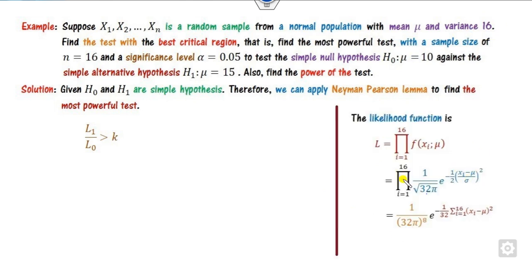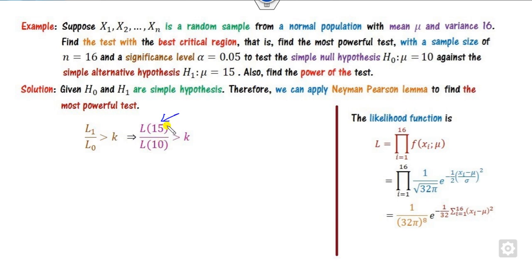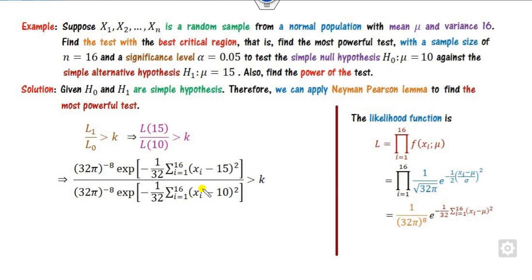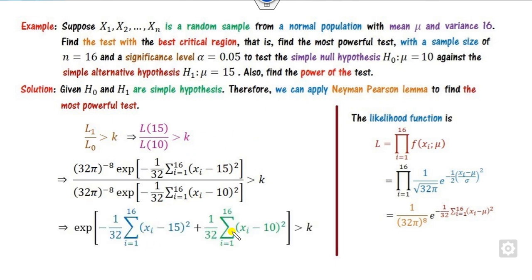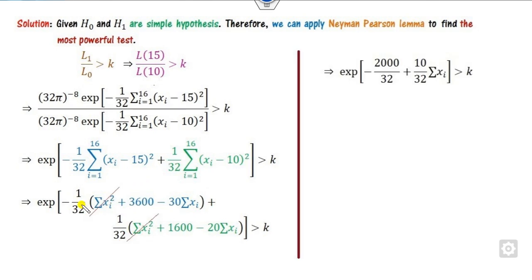Now find L1 (at H1, μ = 15) and L0 (at H0, μ = 10). Set up the ratio L1/L0 > K and substitute μ = 15 in the numerator and μ = 10 in the denominator. The constant terms cancel out. Opening the bracket (x − μ)² = x² − 2μx + μ², you can expand and the x² terms cancel due to opposite signs.